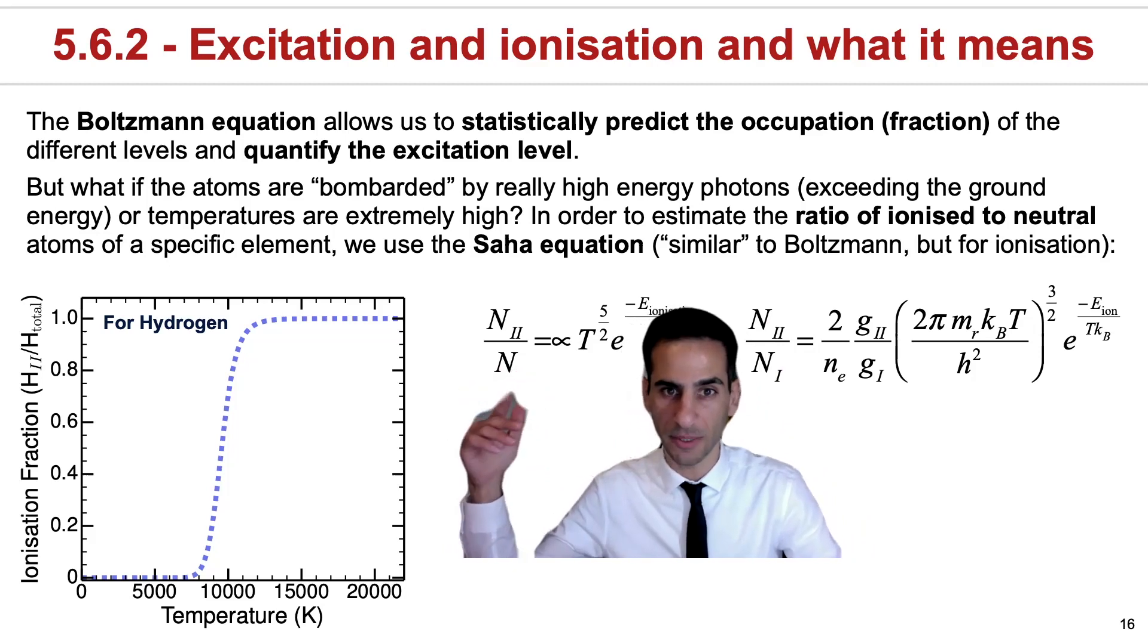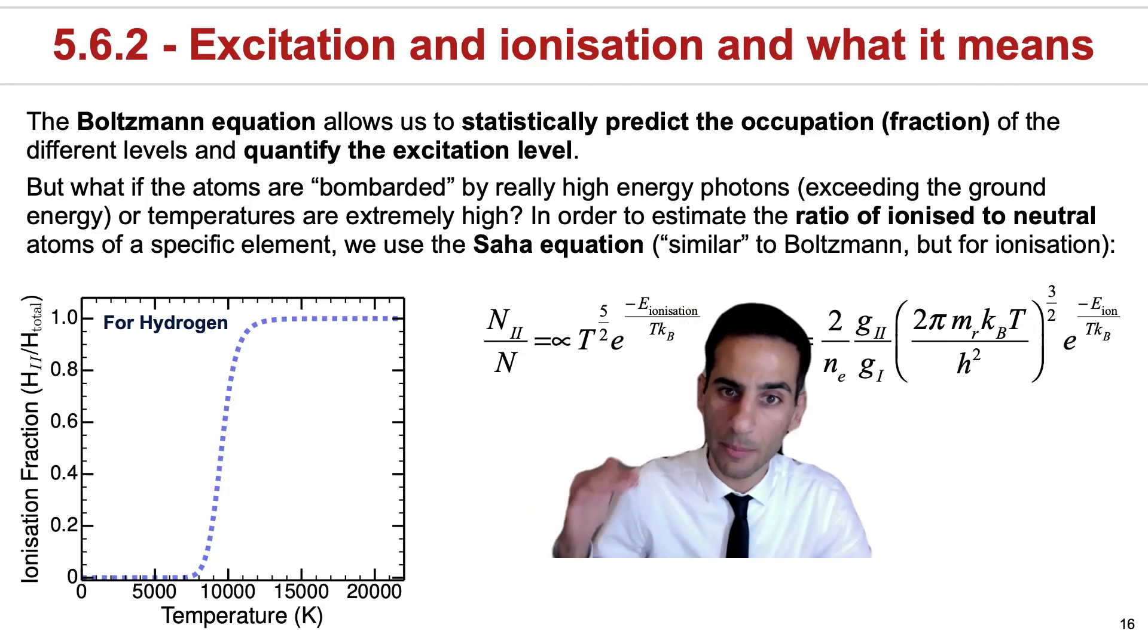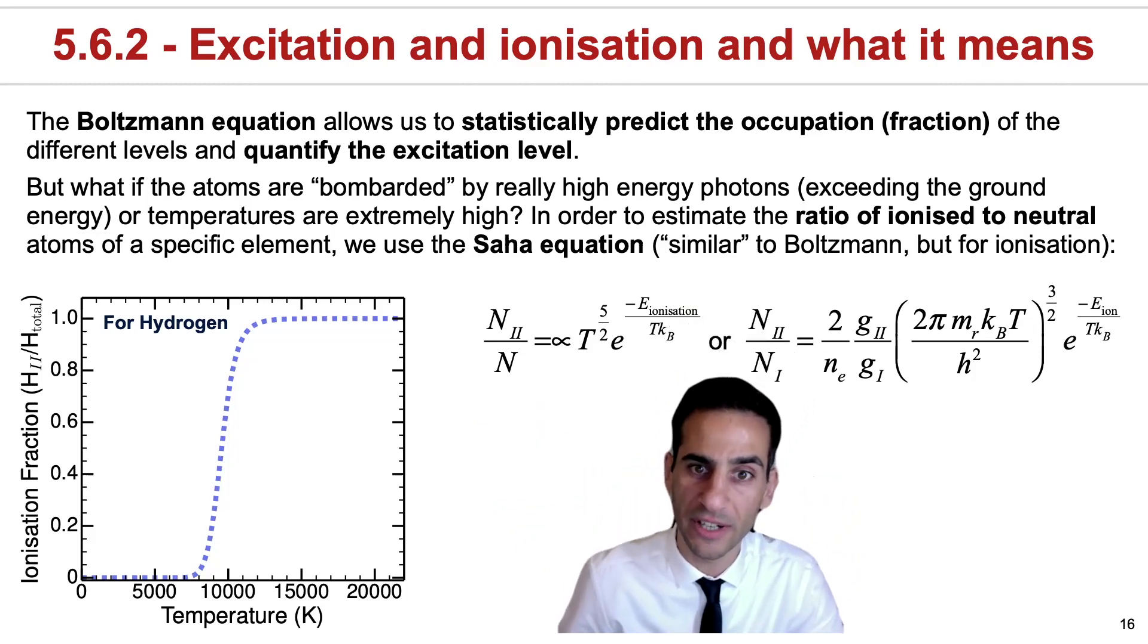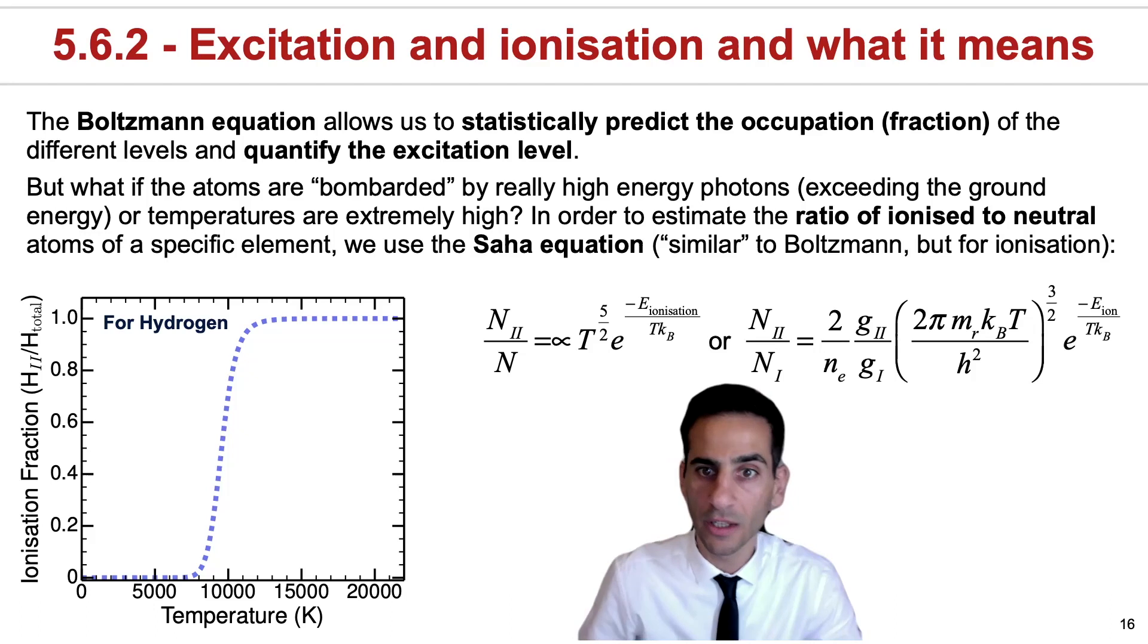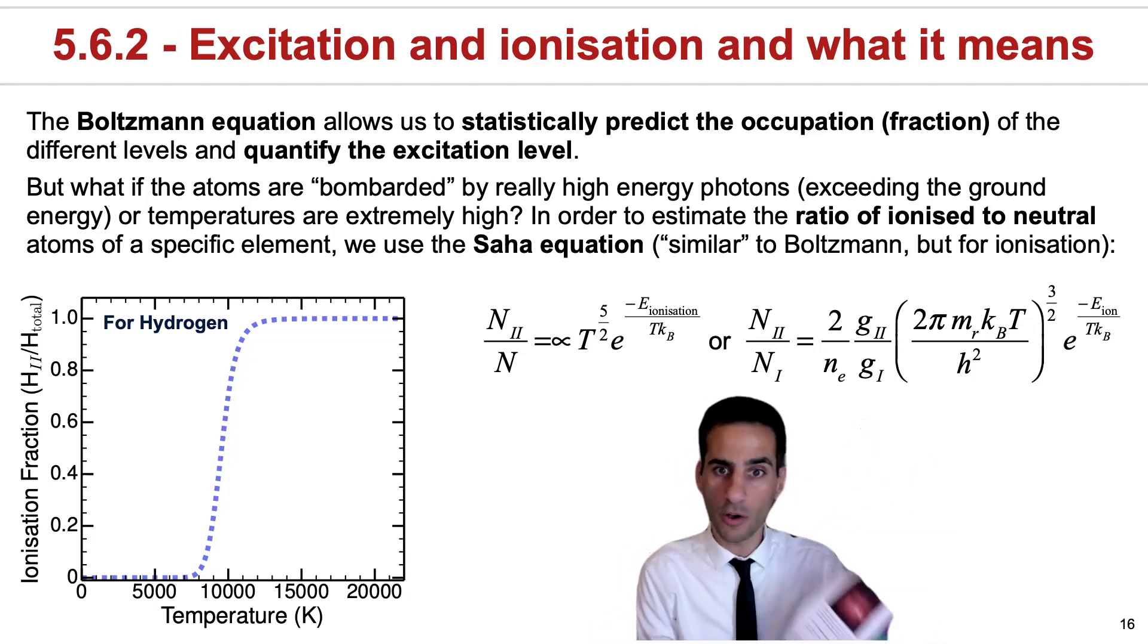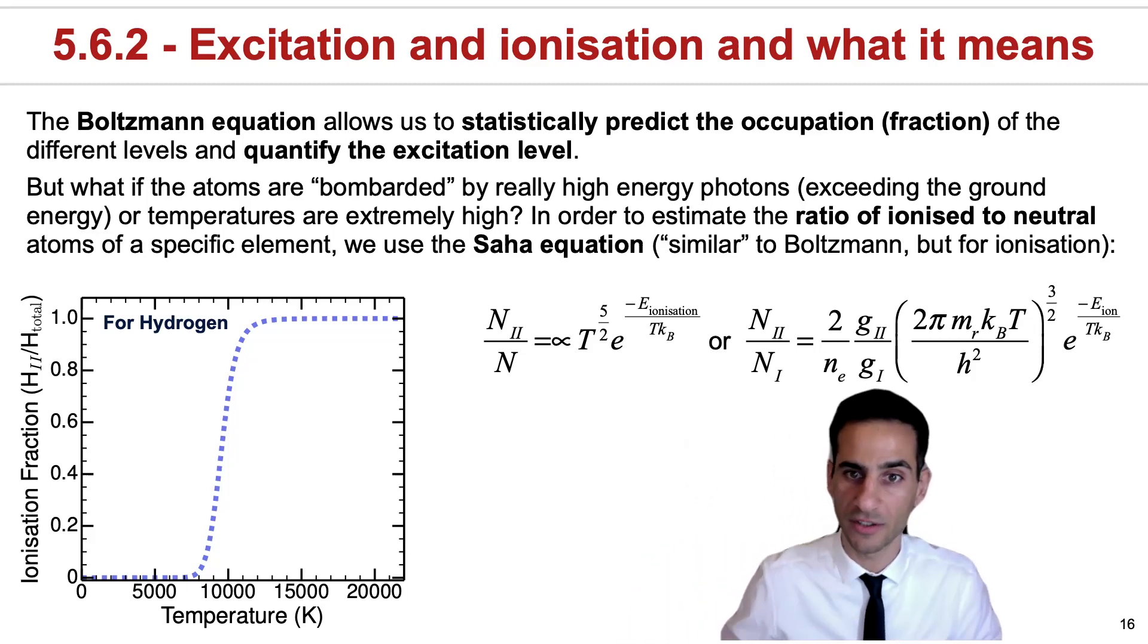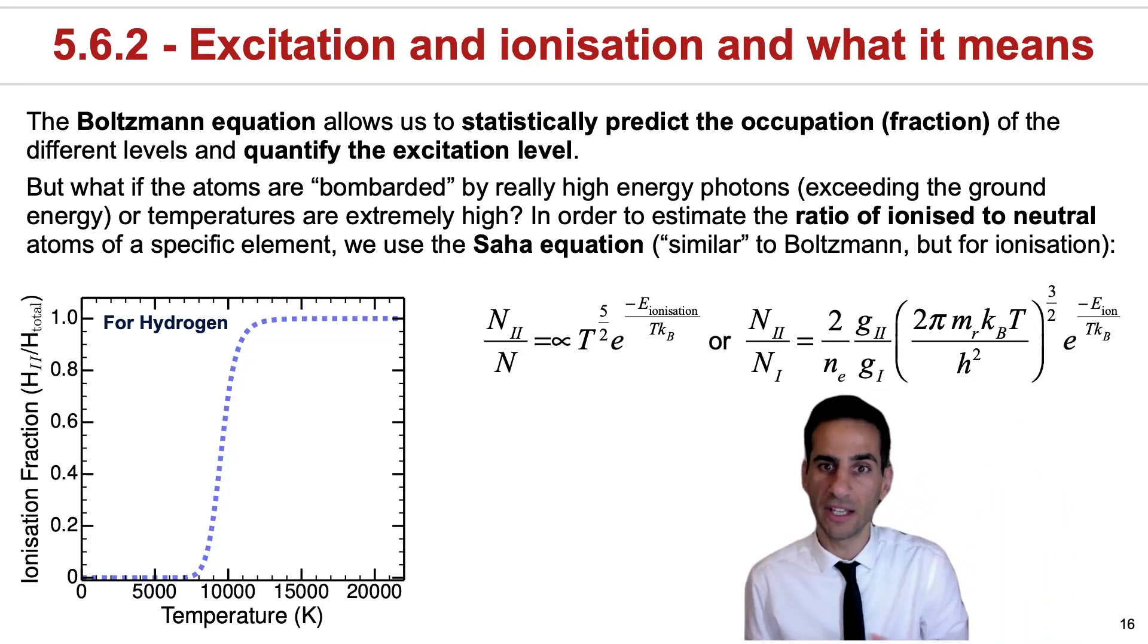It depends on temperature in the same way as Boltzmann, but there's an extra temperature dependence, meaning that the fraction of ionized, that's the two, and I'll explain this better, to non-ionized, goes up very strongly with temperature, even higher than excitation. The full Saha equation is given here. You have all the details in the lecture notes. You do not need to memorize any of these equations, of course. But the Saha equation is crucial.